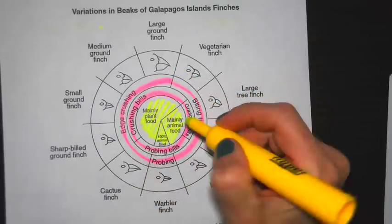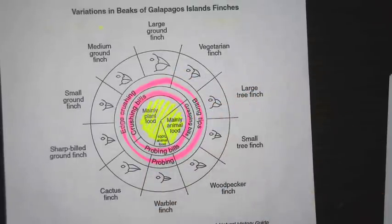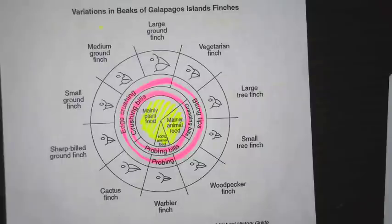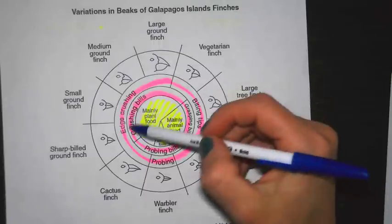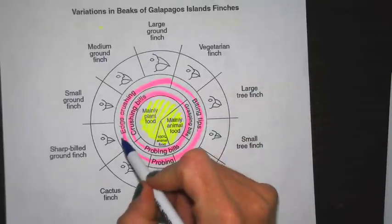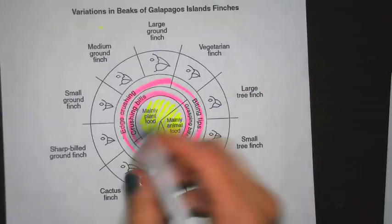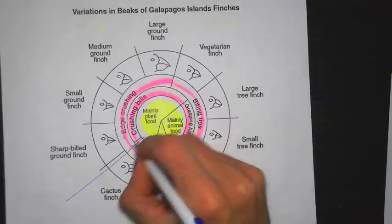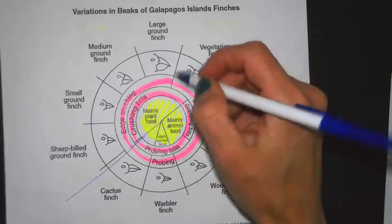The inside of the wheel tells you what the finch is going to be eating. For example, if there's an island that has a lot of nuts, you have to think: what type of beak is best for that environment? The options are edge crushing, biting, or probing. If it's a hard nut or seed, you're going to want one that's capable of crushing.